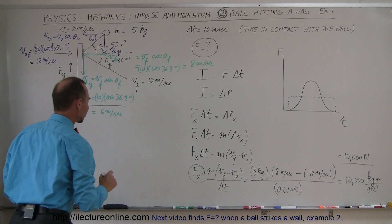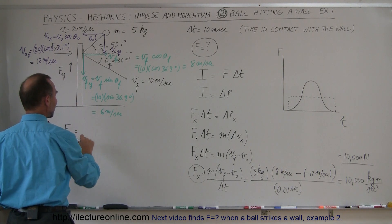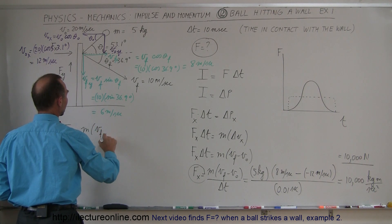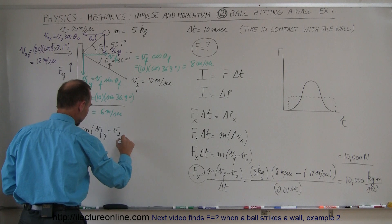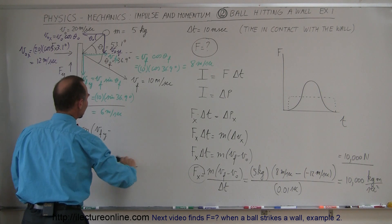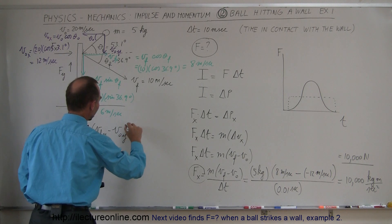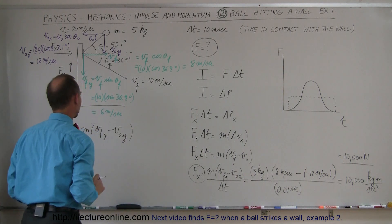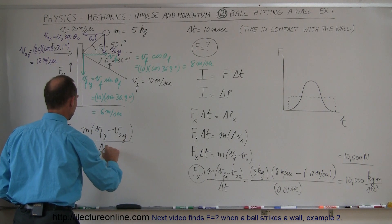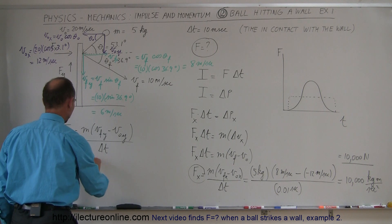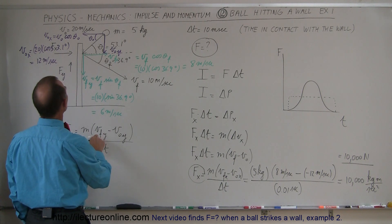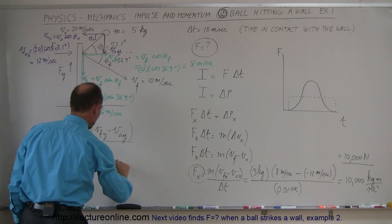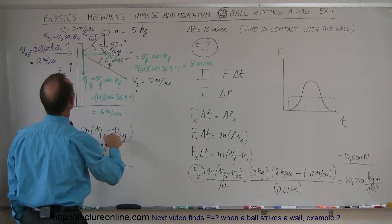The force in the y-direction equals the same equation: mass times (v-final in the y-direction minus v-initial in the y-direction) divided by the change in time. We have the 5-kilogram ball. The v-final in the y-direction is negative 6 meters per second. Now we need v-initial in the y-direction, which we haven't calculated yet.